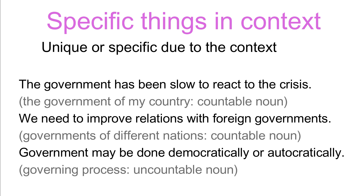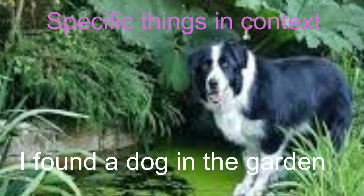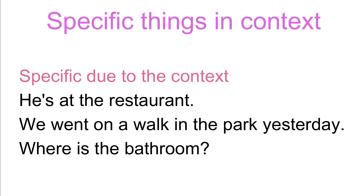Consider this sentence: 'I found a dog in the garden.' Even though the word 'garden' was not introduced earlier, 'the' is used since in context the listener knows which garden the speaker is talking about. Similar examples: 'He's at the restaurant.' 'We went on a walk in the park yesterday.' 'Where is the bathroom?' In these sentences, 'the' is used since the listener is assumed to know which restaurant, park, and bathroom the speaker is talking about. As we can see, 'the' is a context-dependent word.